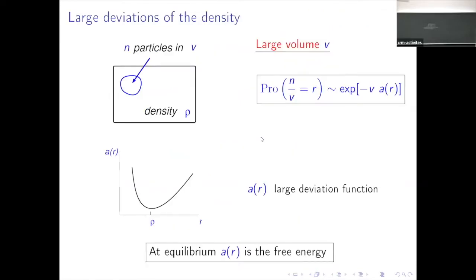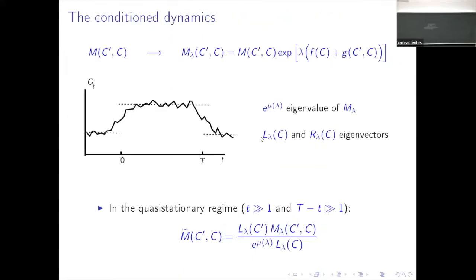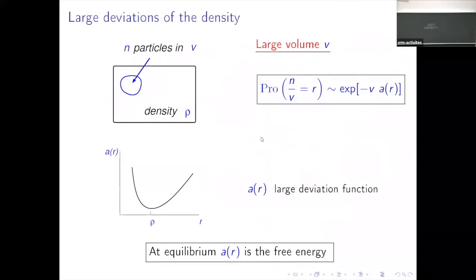If you want to impose a current on average over a long time interval, the optimal way to realize this constraint is to always do the same thing in the middle — at least for this finite dimensional system. Now let me mention some more recent results. It is just the extension of work that we have been doing many years ago, so let me remind you very quickly what those results were and then tell you what is new.